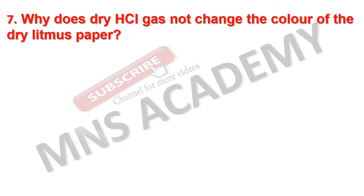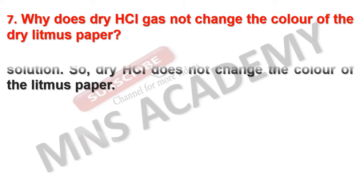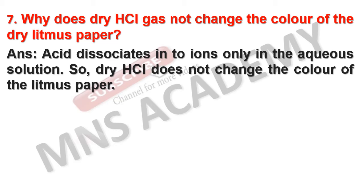Why does dry hydrogen chloride gas not change the color of dry litmus paper? Acid dissociates into ions only in aqueous solution, meaning in the presence of water. So dry HCl does not change the color of the litmus paper.